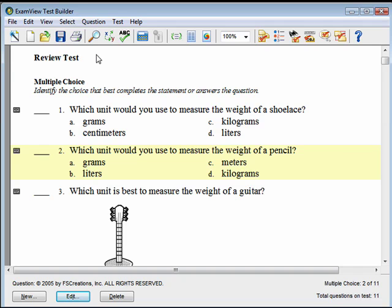When you duplicate a dynamic question, it automatically recalculates the variables to change the question. The number of times you can duplicate a question with unique values depends on the algorithms programmed into the question.